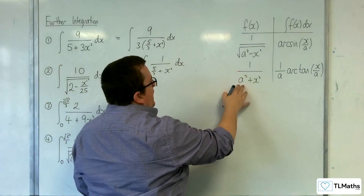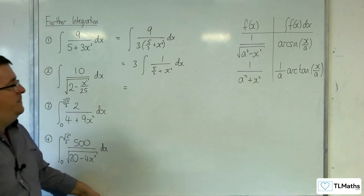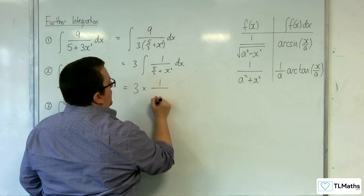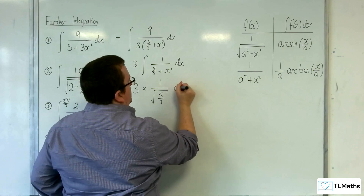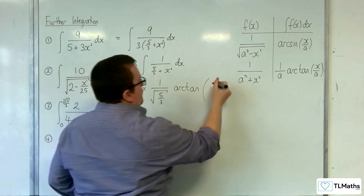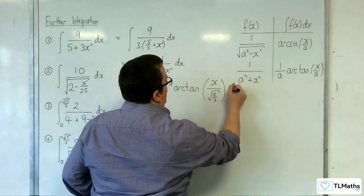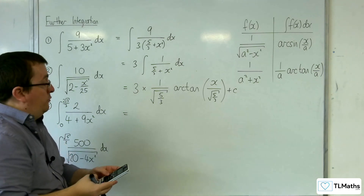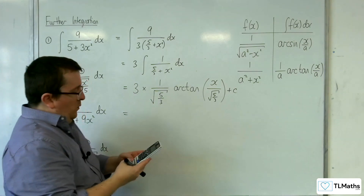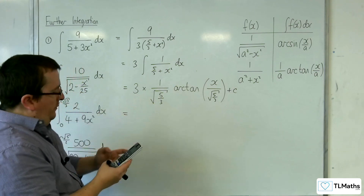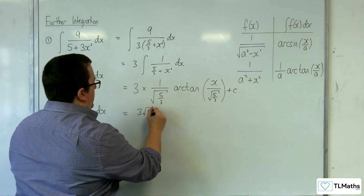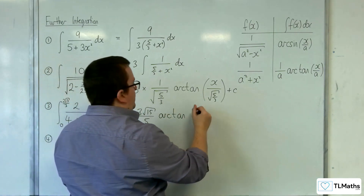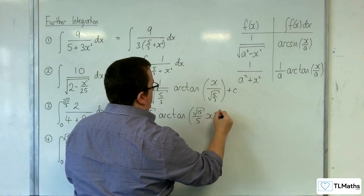We can see that a squared is 5 thirds, so a is going to be the square root of 5 over 3. We're going to have 3 times 1 over a, so 1 over the square root of 5 thirds, arc tan of x over the square root of 5 thirds, plus your constant c. The square root of 5 thirds is root 15 over 3. 1 over that is root 15 over 5, times that by 3, so 3 root 15 over 5 arc tan of root 15 over 5 times x plus your constant c.